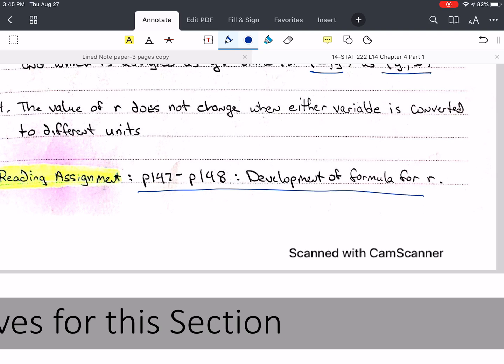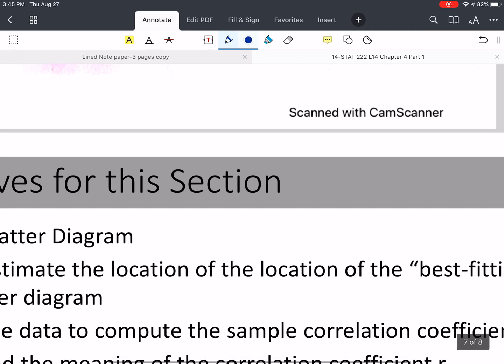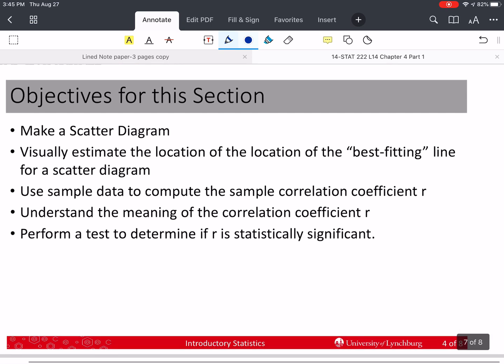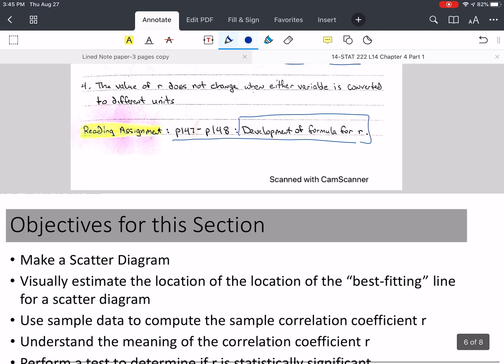I want you to read pages 147 to 148. It's the section called Development of the Formula for R. That's as far as we're going to go in this video. It is important that you do this, that you read this assignment. I'm not expecting you to understand everything, but I want you to have an idea of how it was developed.